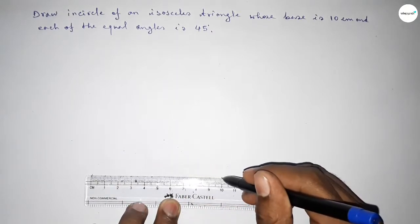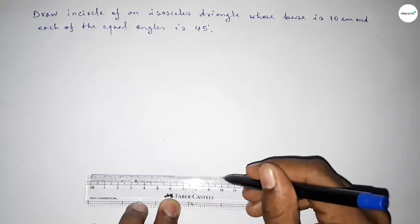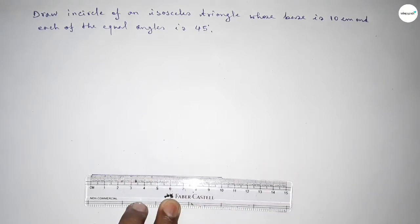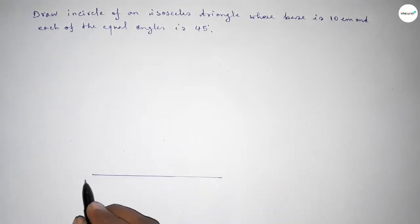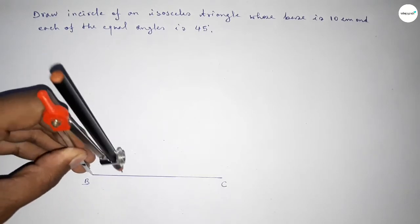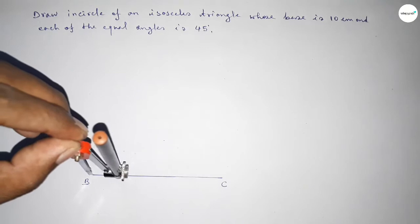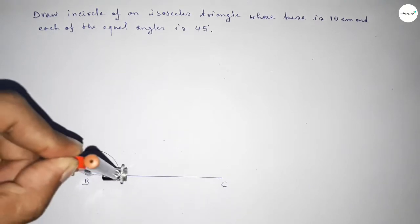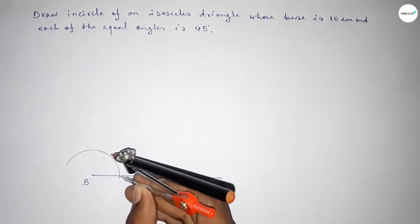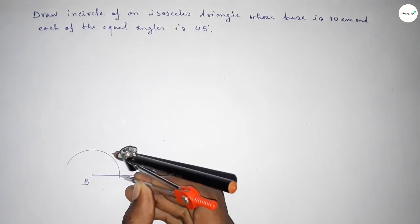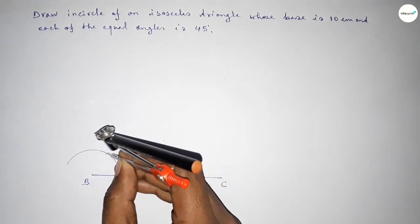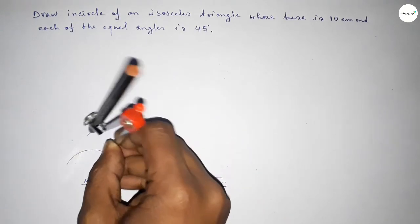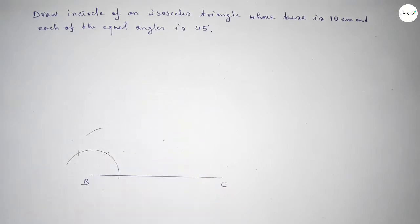This is 10 centimeters, marking points B and C. Now first we have to draw a 90 degree angle at point B. Taking any length and drawing an arc, then with the same length putting the compass here and cutting here.